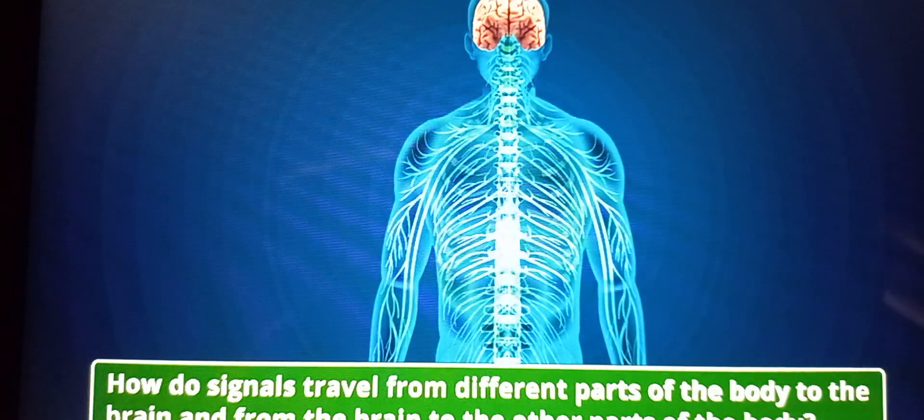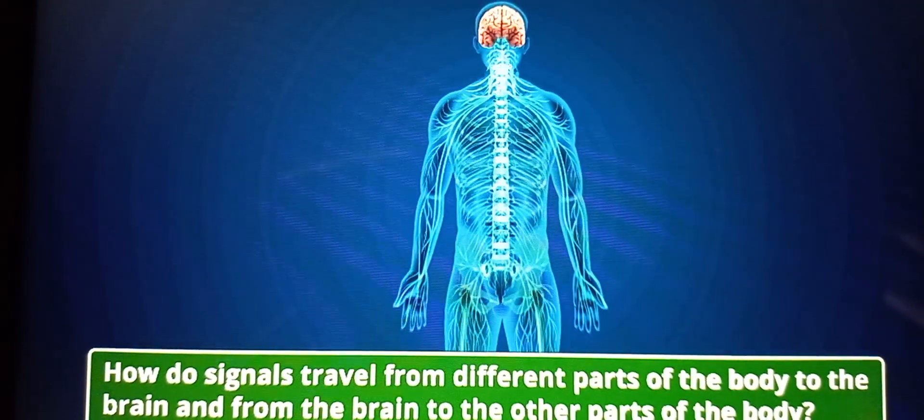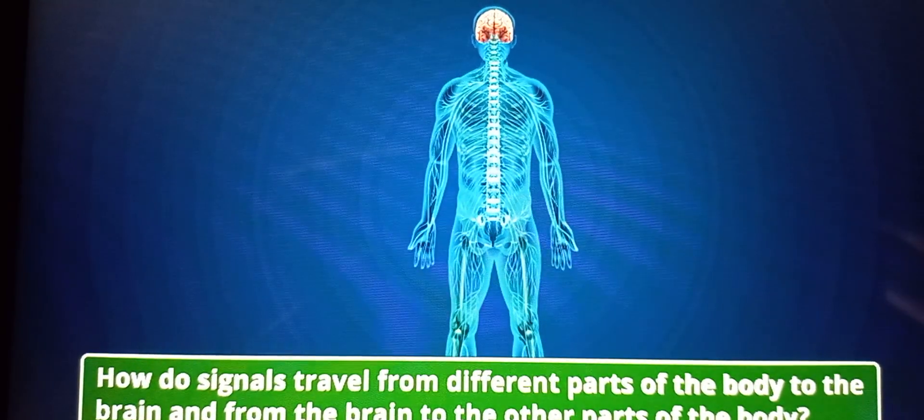But how do signals travel from different parts of the body to the brain and from the brain to the other parts of the body?